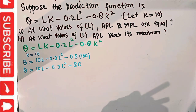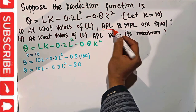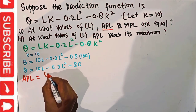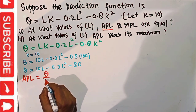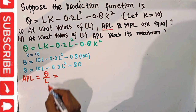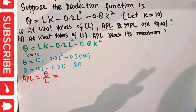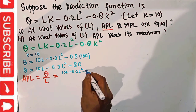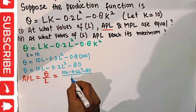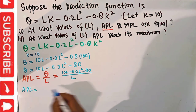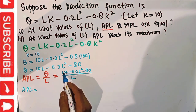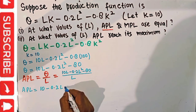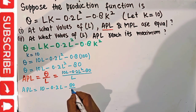Given this production function, first we need to find the average product of labor. APL equals total product divided by labor. So we divide the production function by L: APL = (10L − 0.2L² − 80) / L, which simplifies to APL = 10 − 0.2L − 80/L.